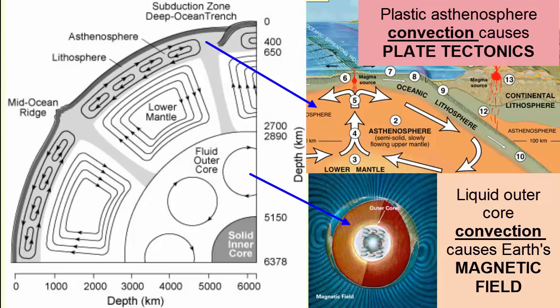This transfer of heat in a plastic or liquid medium is called convection and is the main cause of plate tectonics, convection of the asthenosphere, and the Earth's magnetic field, convection of the outer core.